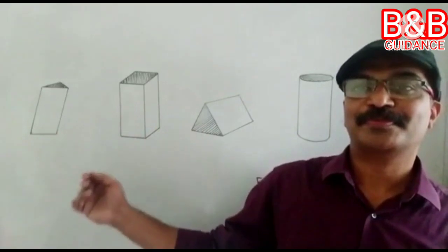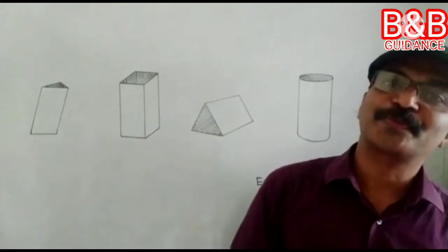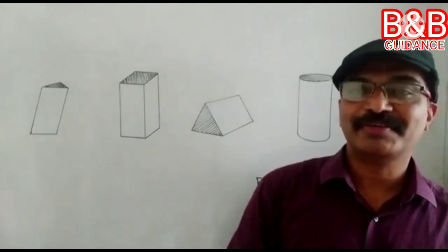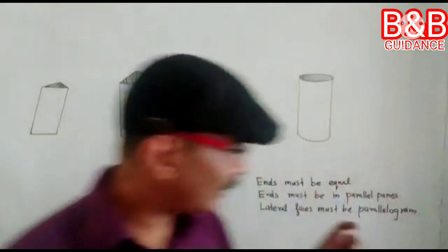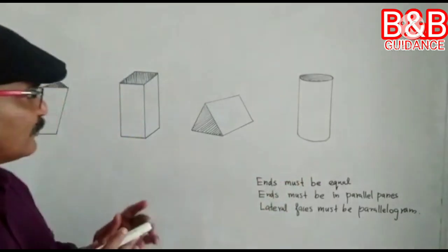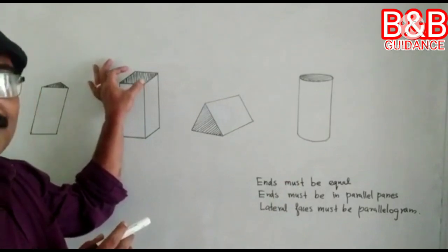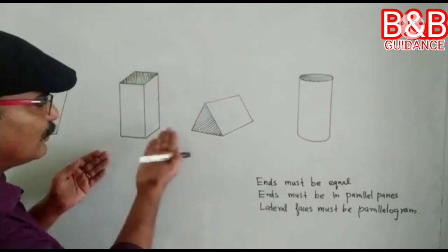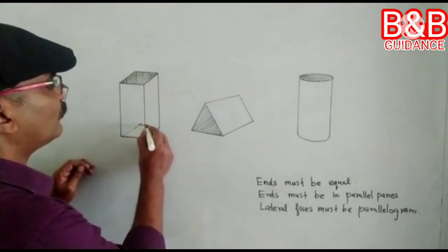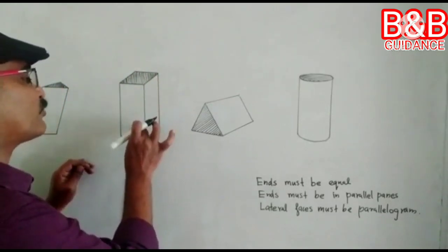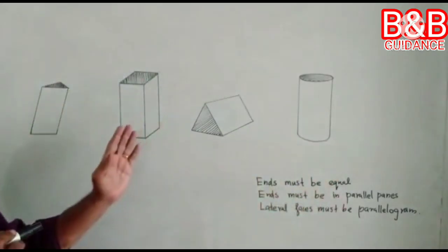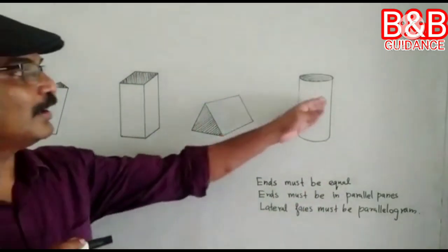Is this a prism? What about this? I know you may have a different opinion. The condition is given here. The first condition: ends must be equal — I mean identical. Here, one end is shaded and that shape is rectangular, and the other end is also rectangular. You cannot see that, but it is also rectangular, and they are equal in all respects. The first condition is satisfied for all four figures.